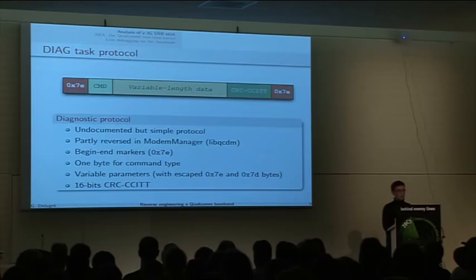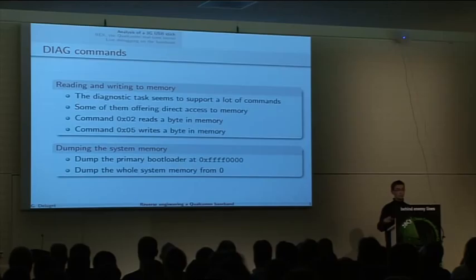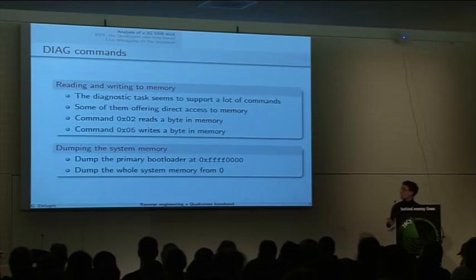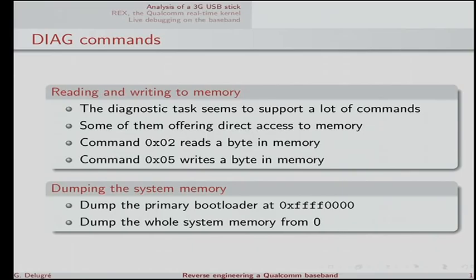The protocol has begin/end markers, one byte indicating the command, variable parameters depending on the command, and a CRC. There are a lot of commands in this diagnostic mode. Some of them offer direct access to the baseband memory. For example, command 2 reads a byte in memory, and command 5 writes a byte in memory. There are hundreds of commands.